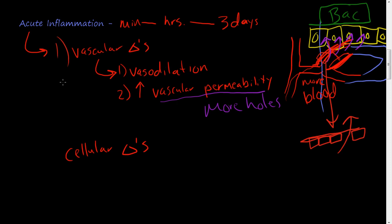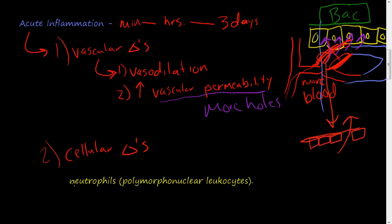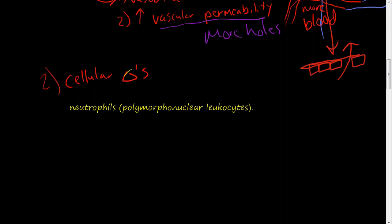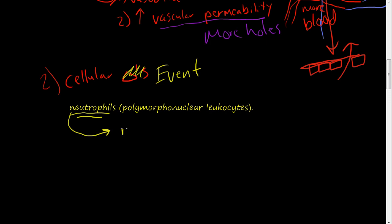That's the first step: vascular changes. The second is cellular changes — or more accurately cellular events. When you increase vascular permeability and when you have vasodilation, you're going to have more leukocytes as the primary cells that respond to the emergency area, and neutrophils are the main one. They're also named polymorphonuclear leukocytes. Neutrophils are going to be the first responder to the scene.